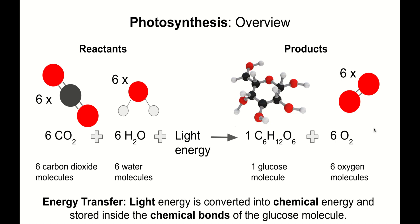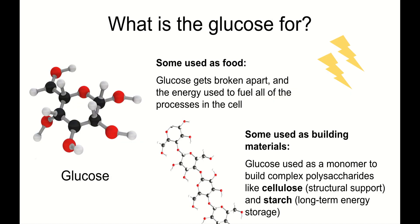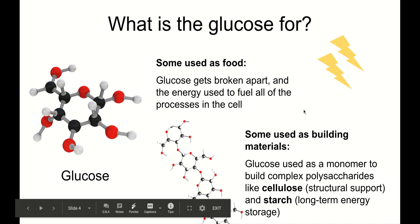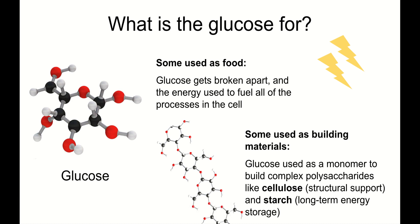We talked about the purpose of photosynthesis. The point of photosynthesis is making glucose. This oxygen is an unwanted byproduct. Some of the glucose gets used as food, broken apart, and the energy is used to fuel all of the processes in the cell. Some of the glucose is used as building materials, as a monomer to build complex polysaccharides, like cellulose for structural support, or starch for long-term energy storage.